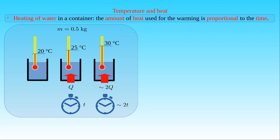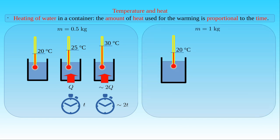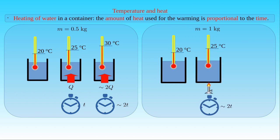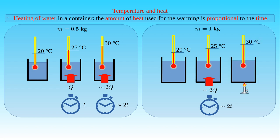If we perform this experiment with 1 kilogram of water, we will see that it takes about 2 times longer to warm up the liquid from 20 degrees Celsius to 25 degrees Celsius. Therefore, the amount of heat transferred to the water is equal to about 2 times Q. When the temperature of water reaches 30 degrees Celsius, we find that the time of heating is about 4 times T. As a result, we can state that the heat absorbed by the liquid is about 4 times Q.